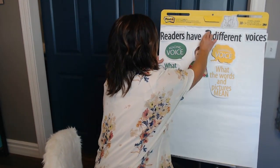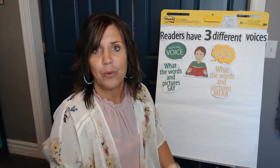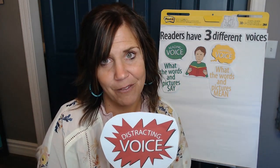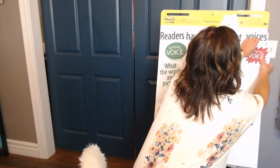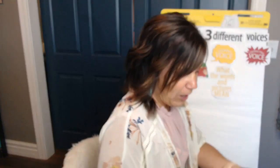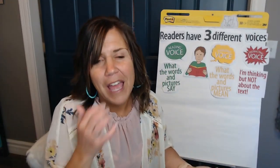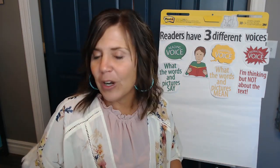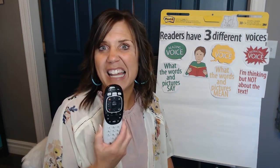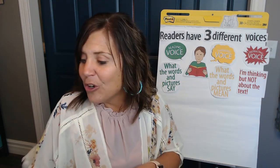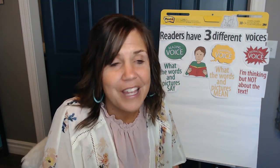Today we're going to talk about how readers have three different voices. We're going to introduce another voice — it's called a distracting voice, and it's on red paper. It's not a voice we really want to have. It's where we get distracted and we're not thinking about the text. But good readers have a distracting voice — it's normal, everybody has one. Good readers learn how to mute that distracting voice, kind of like with a remote control where you hit the mute button. They mute it so they can go back to their thinking voice and reading voice and really think about what they're reading.